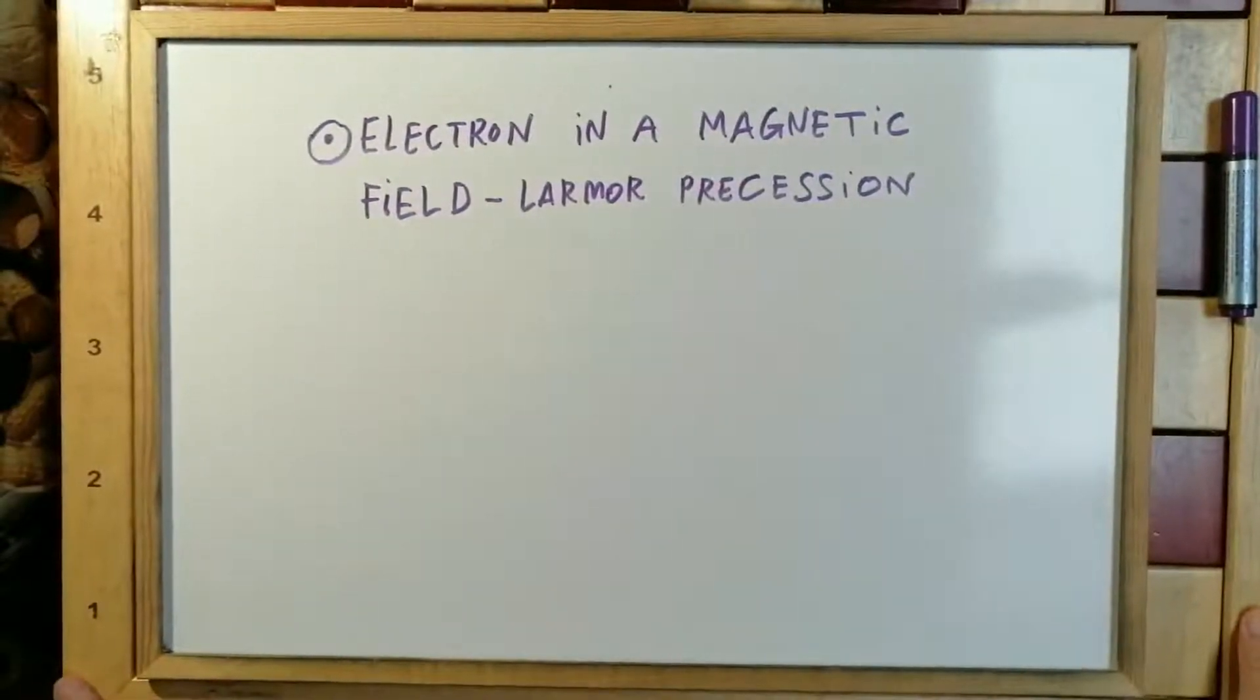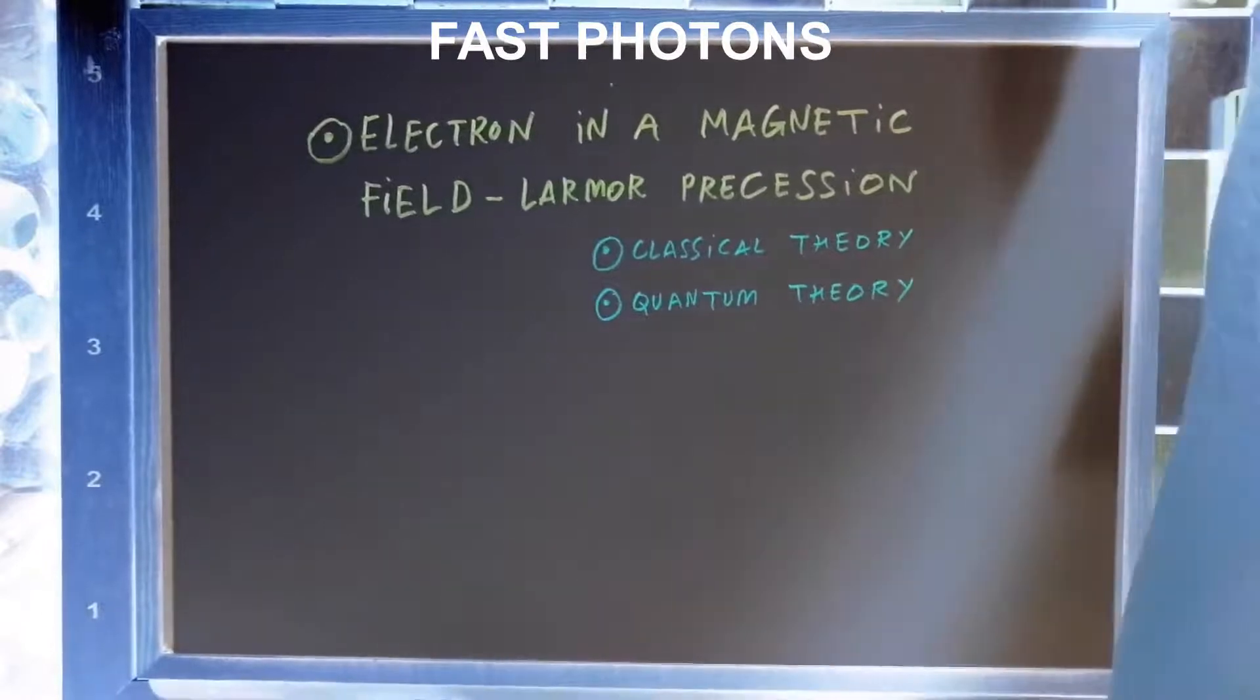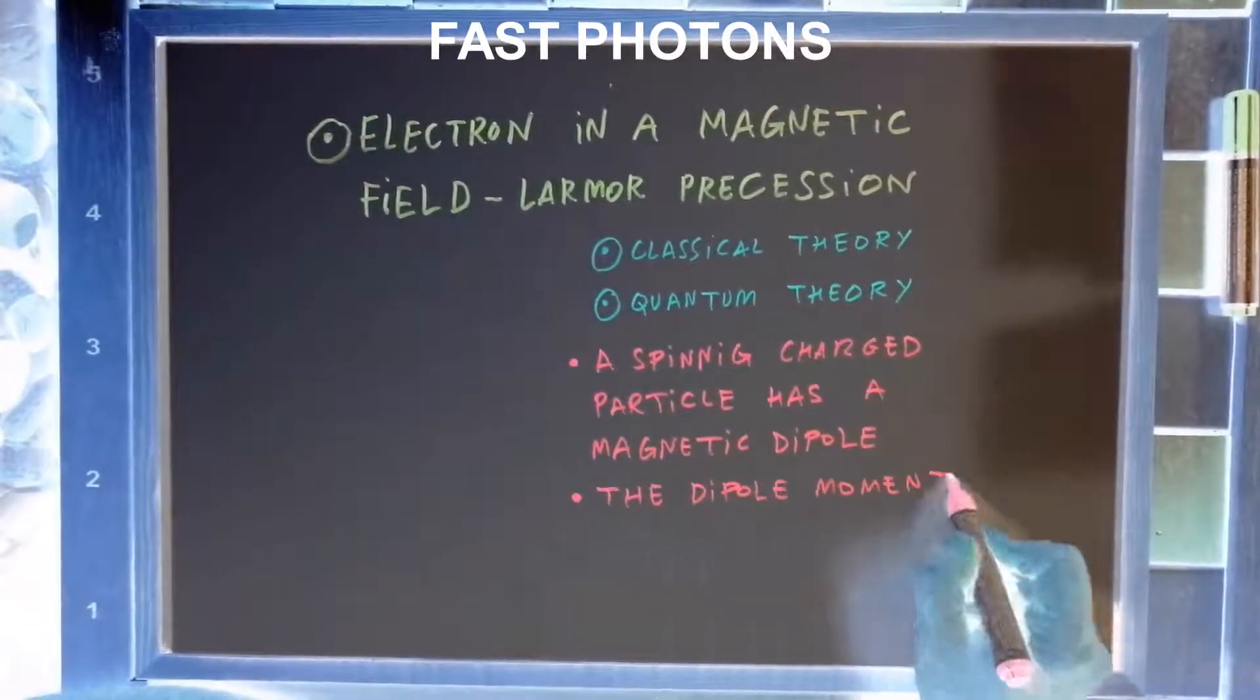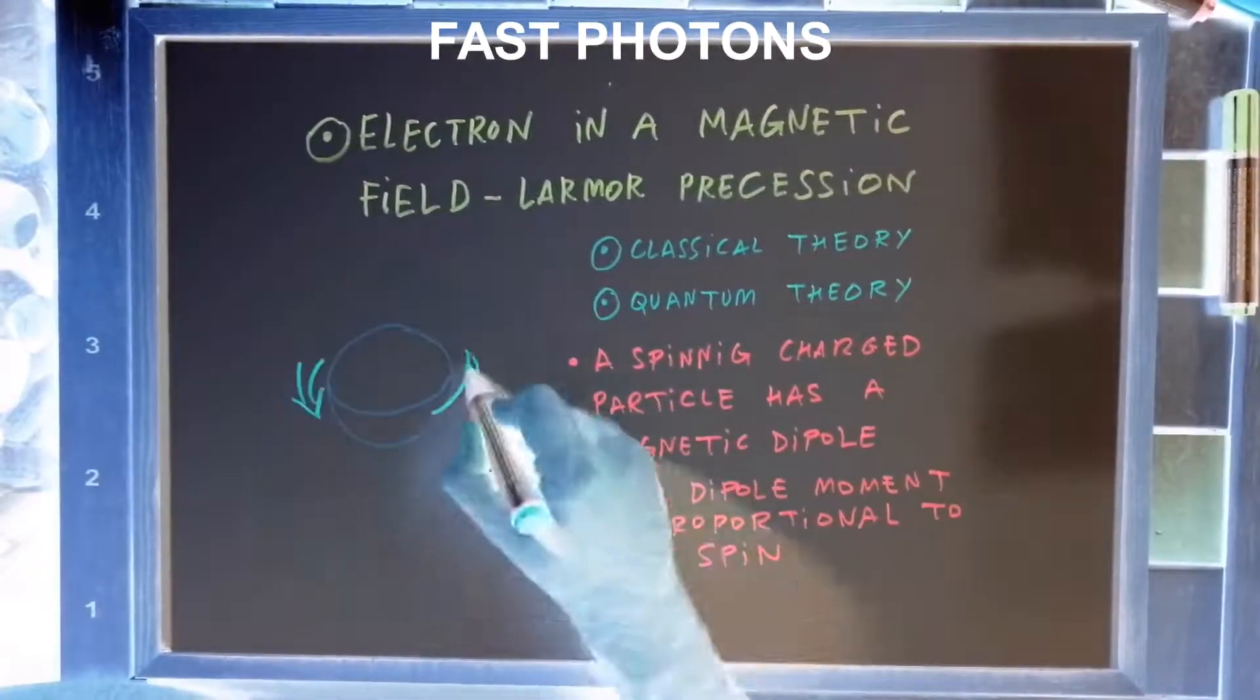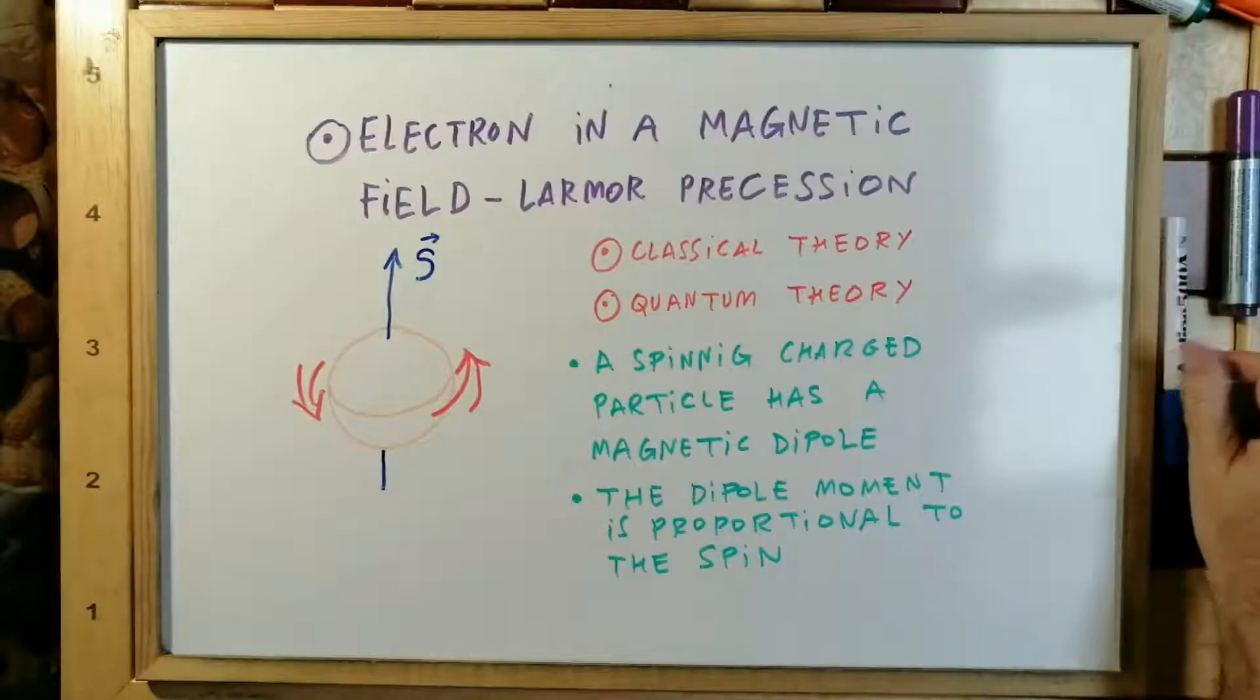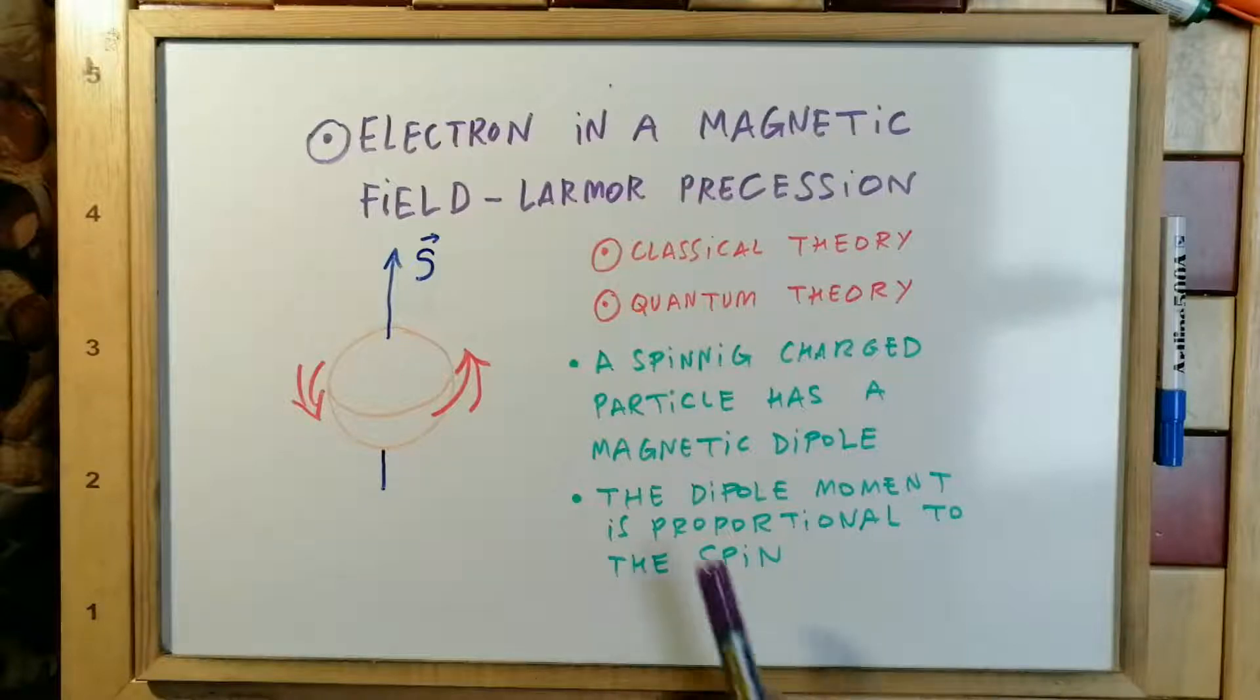Hello, we study electron in a magnetic field and learn about Larmor precession. We will see the classical theory and the quantum theory. We know that a spinning charged particle has a magnetic dipole, and the dipole moment is proportional to the spin.